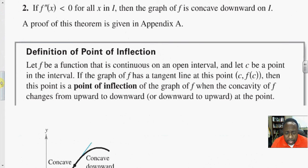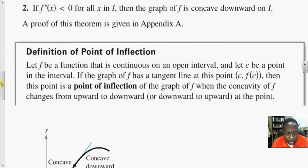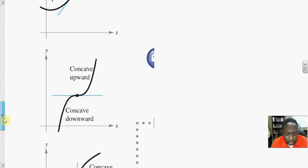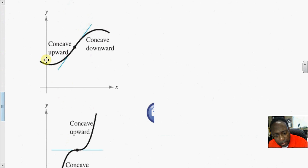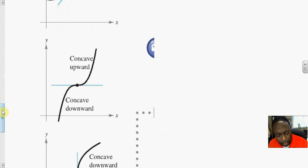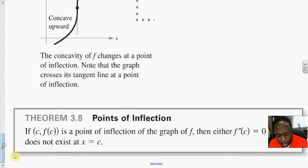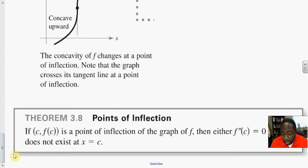The point of inflection is simply the point where the function shifts concavity. If the concavity goes from upward to downward or downward to upward, then that point where the concavity changes is said to be the point of inflection. If the concavity does not change at a particular point, then there is no point of inflection there. To find the point of inflection, you set the second derivative equal to 0, and those values of x are the possible points of inflection.